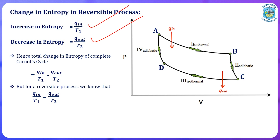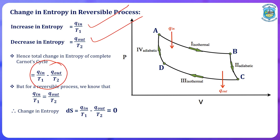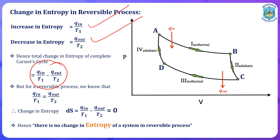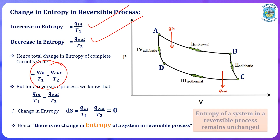In an irreversible process the entropy change may differ between the two states, but for a reversible process, using the efficiency relation of Carnot's engine, we find Q_in/T₁ = Q_out/T₂. Substituting this into the total entropy expression, the increase in entropy and decrease in entropy cancel out, giving a final change in entropy of zero. Hence, there is no change in entropy of a system in a reversible process. Conclusive statement: the entropy of a system in a reversible process remains unchanged.